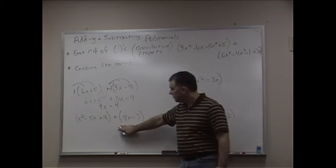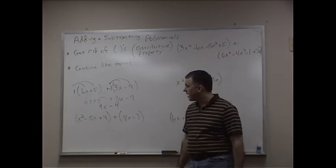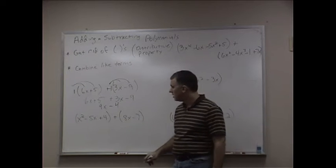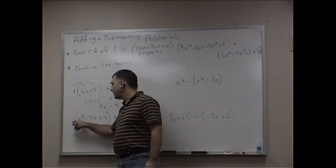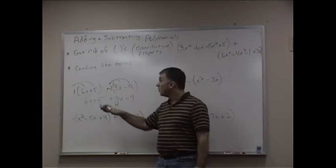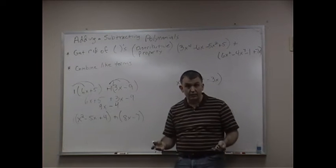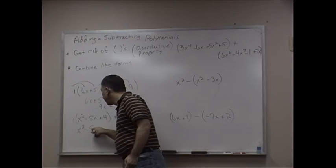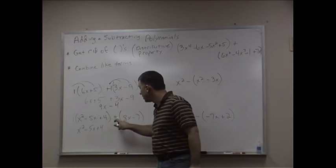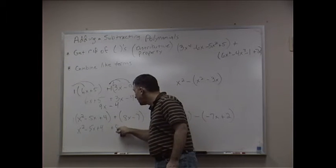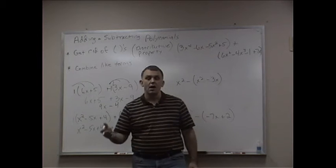Now I have x squared minus 5x plus 4 plus 8x minus 7. We can put the 1's on the outside and we can distribute the 1's through. But we just saw earlier, if it's just positive 1, it's x squared minus 5x plus 4. That's a positive 8x. So plus 8x minus 7. Nothing changes.